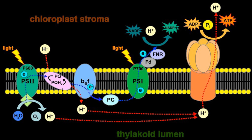Cytochrome B6F and ATP synthase work together to create ATP. This process is called photophosphorylation, which occurs in two different ways. In non-cyclic photophosphorylation, cytochrome B6F uses the energy of electrons from PSII to pump protons from the stroma to the lumen. The proton gradient across the thylakoid membrane creates a proton motive force, used by ATP synthase to form ATP.